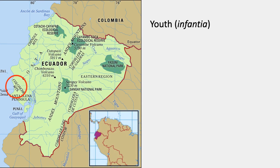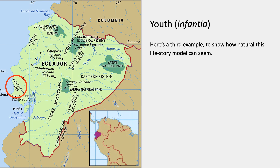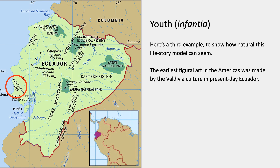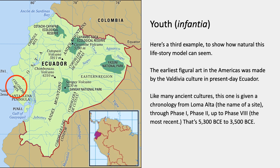I'm going to give a non-Western example — a pre-Columbian example — to show how natural this kind of life story model can seem and how it can invade scholarship and inhabit the imagination of art historians and, in this case, also archaeologists. The earliest figural art in the Americas was made by the Valdivia culture in present-day Ecuador, right on the coast. Like many ancient cultures, this one has a chronology that comes not from styles but from archaeological sites. The earliest Valdivia figurines come from a site called Loma Alta, and the archaeologists named them phase one through phase eight — roughly 5,300 BCE to 3,500 BCE. So it's quite ancient, long before the Incas.